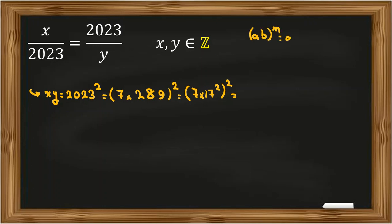We know that ab to the power m equals a to the m times b to the m, so we can apply this: 7 squared times 17 squared, all squared. Next, a to the m to the n equals a to the mn, so we can say 7 squared times 17 to the 2 times 2, which is 4.